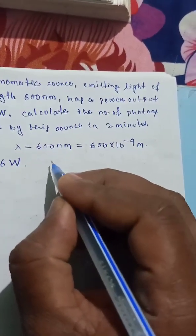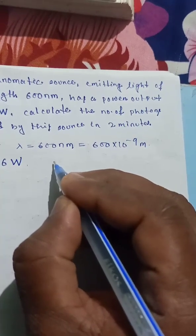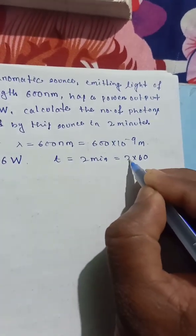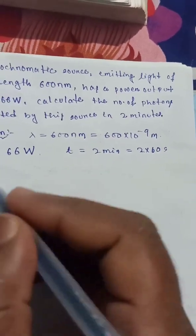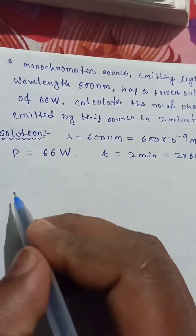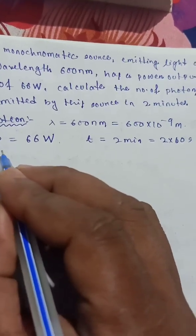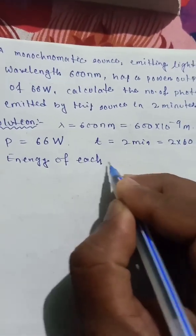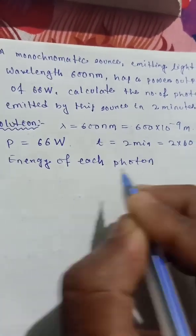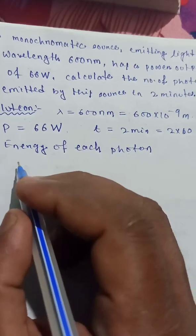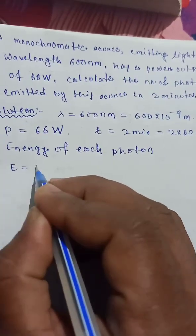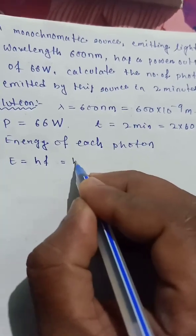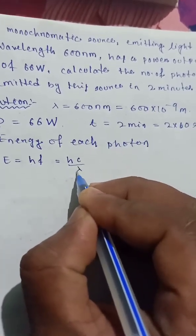We have to find the number of photons. Time is equal to 2 minutes, which is 2 into 60 seconds. First, we calculate the energy of each photon. The energy of a photon is equal to h times f, where h is Planck's constant and frequency f is equal to c divided by lambda.